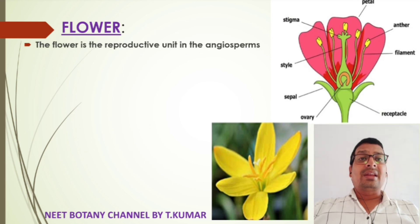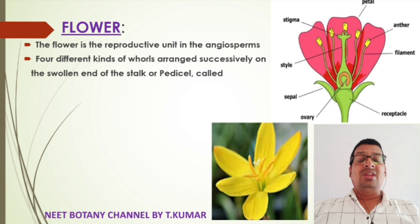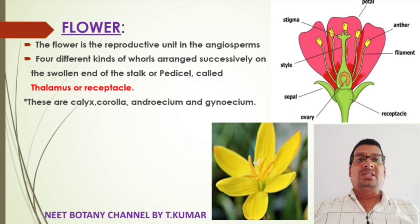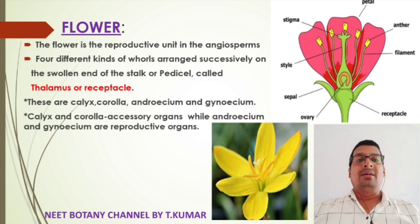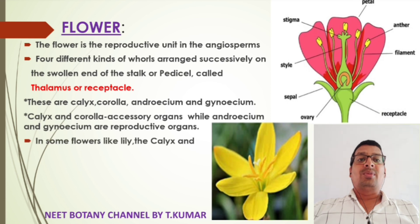The flower is the reproductive unit in the angiosperm. It has four different kinds of whorls arranged successively on the swollen end of the stalk or pedicel called the thalamus or receptacle. These are calyx, corolla, androecium, and gynoecium. Calyx and corolla are accessory organs while androecium and gynoecium are reproductive organs.